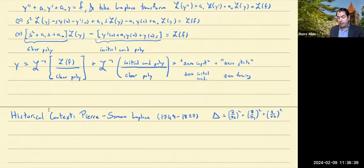Laplace's work on probability started to appear in 1812 — the same year Napoleon decided to invade Russia. The first edition of Laplace's work on probability was dedicated to Napoleon le Grand, but for obvious reasons that dedication was removed from subsequent editions. Laplace's work on probability was extremely influential: he worked out fundamental results in statistics, developed Bayesian methods, developed the method of least squares, and worked out the central limit theorem.